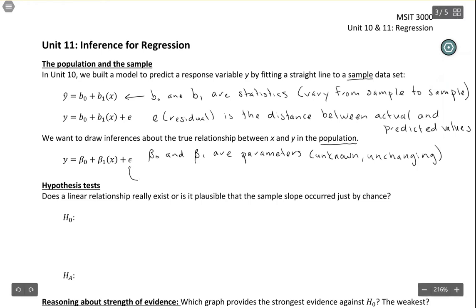I want to point out this little epsilon here. Even if we knew the true population slope and intercept, there would still be variation around the line. Even in the population, there's still variation around the line.